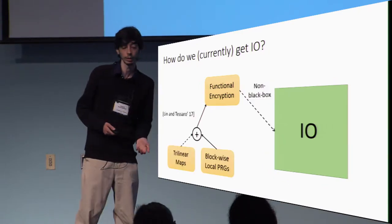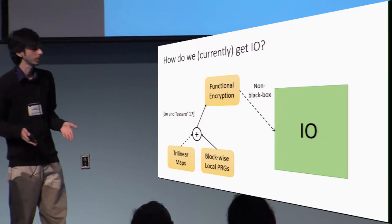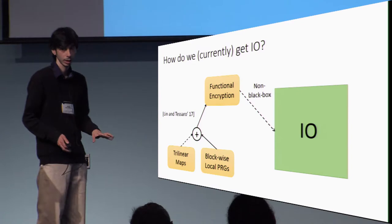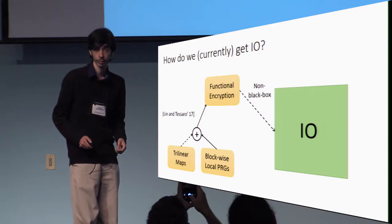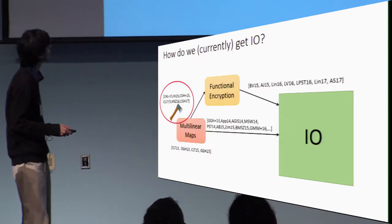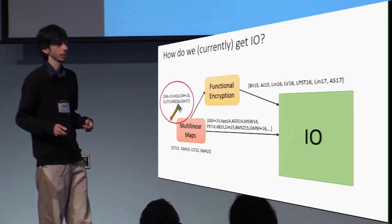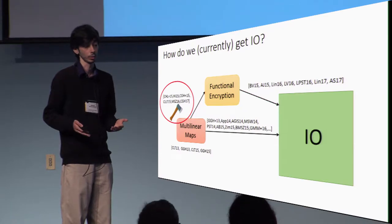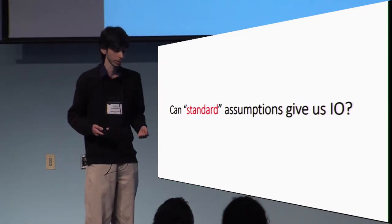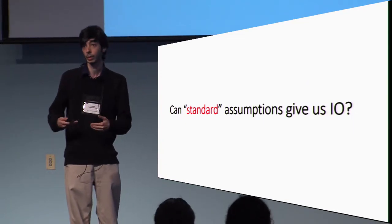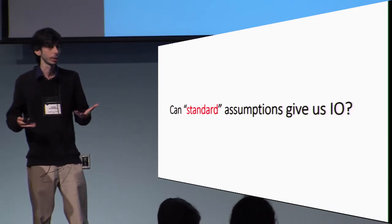As seen from the previous talk by Rachel, the state of the art of constructing I.O. via functional encryption is based on trilinear maps and PRGs with special properties, and their construction is non-blackbox. However, due to certain attacks against the instantiated multilinear maps, we have less confidence in the security of known I.O. constructions. This motivates us to ask whether there are alternative, preferably standard, assumptions that could give us I.O. instead of the more exotic multilinear map assumptions.